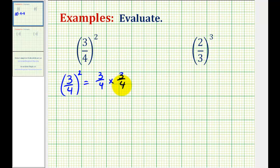So in this form, we can just multiply the fractions. Three times three is equal to nine and four times four is equal to sixteen.